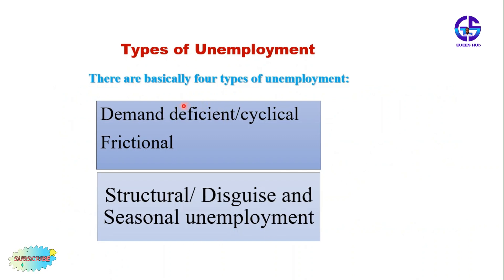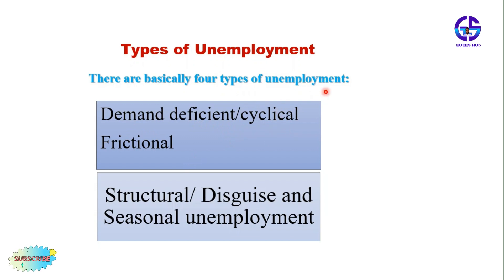The first classification is demand-deficient unemployment, also called cyclical unemployment. We also have frictional unemployment, structural unemployment, and seasonal unemployment.